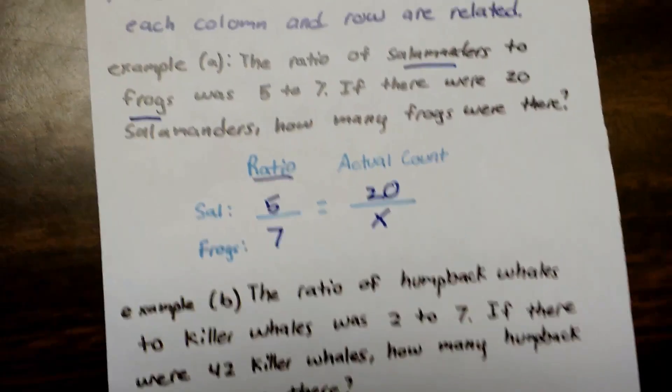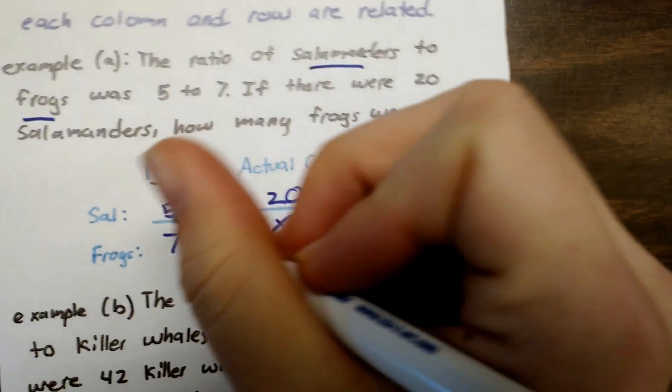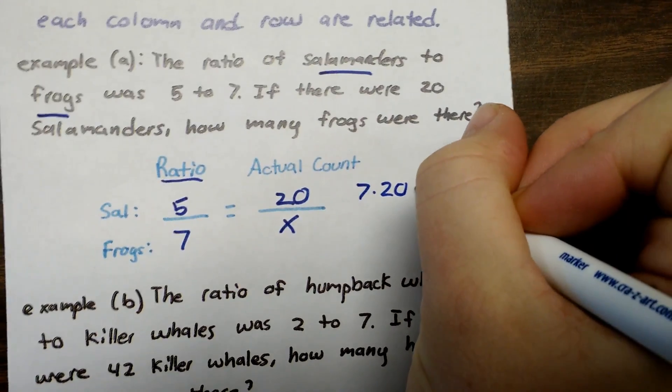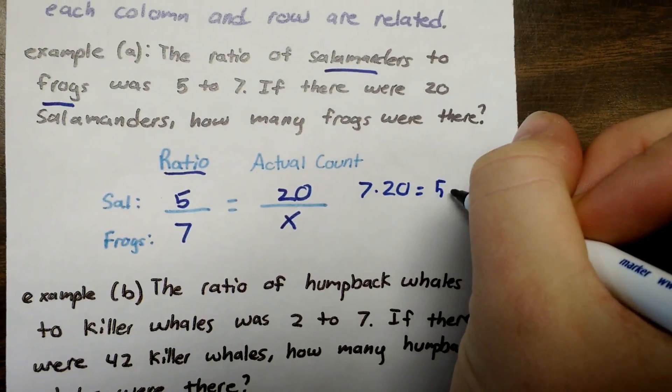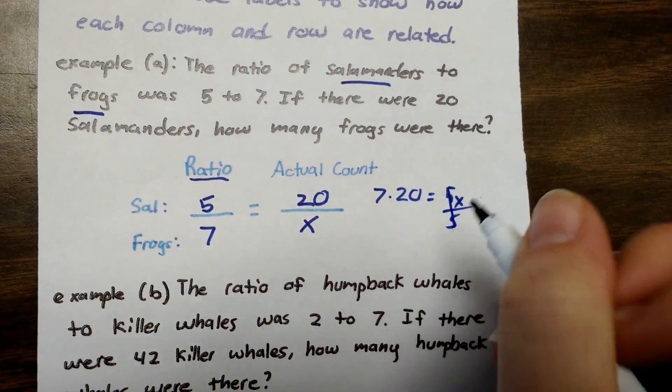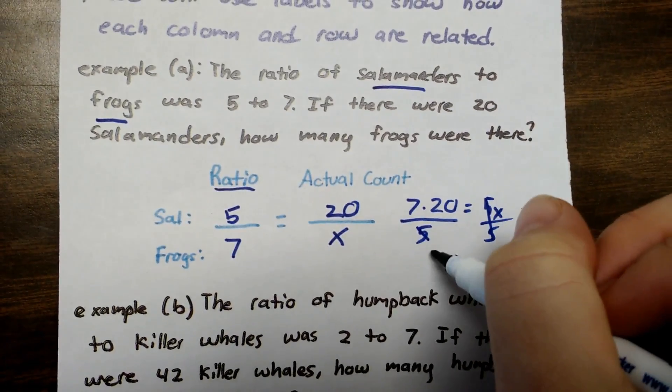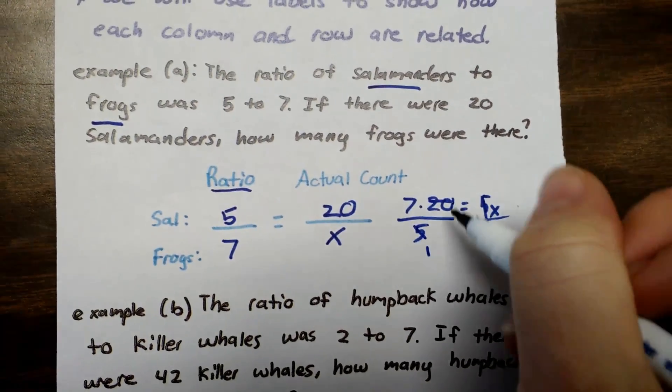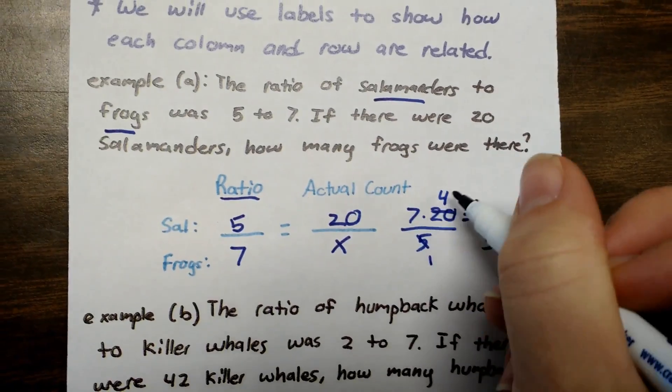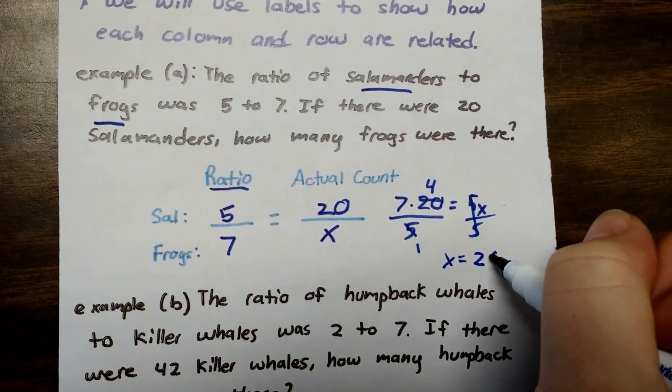So now that I've got it written I'm going to solve it like we've learned how to do. So I'm going to do 7 times 20 equals 5x. Divide by 5, divide by 5. And now I'm going to say 5 goes into 5 one time, 5 goes into 20 four times. And then 7 times 4 means that x equals 28.